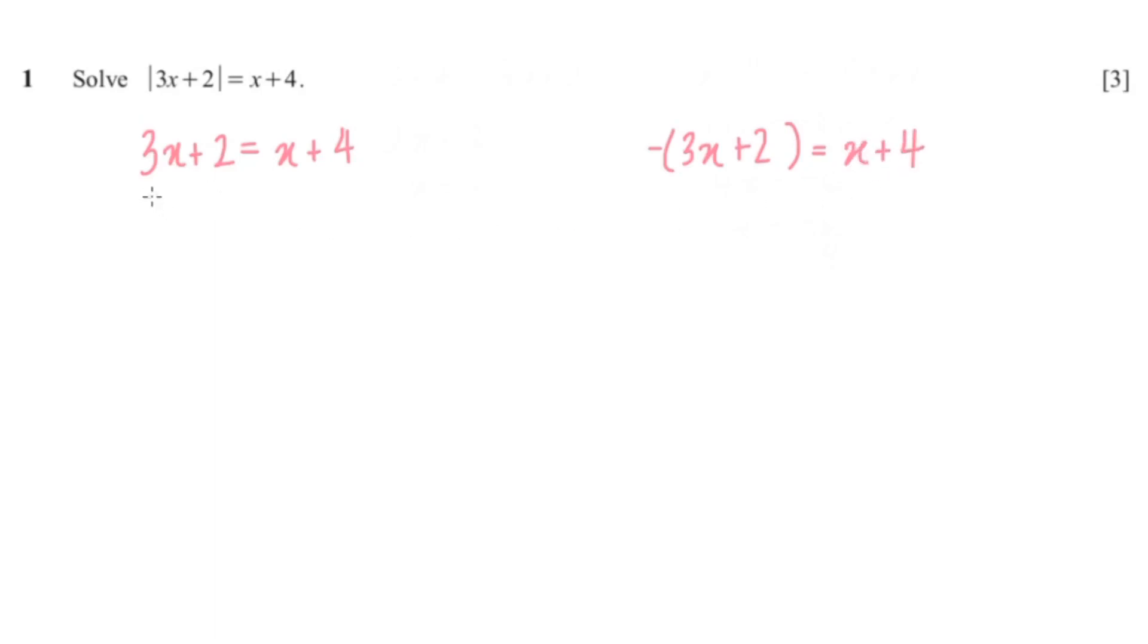Now I'm going to solve this one first, so 3x minus x equals 4 minus 2. 3 minus 1 is 2x equals 2, so x would be 2 over 2, giving us 1.